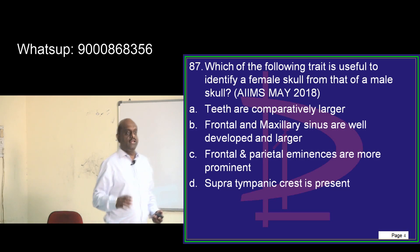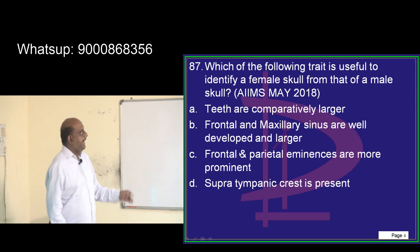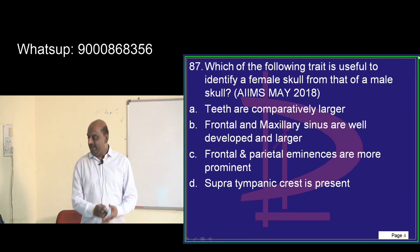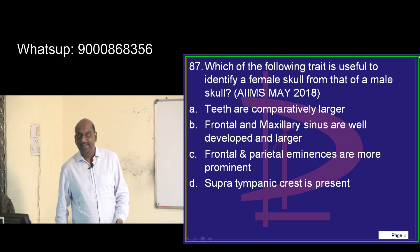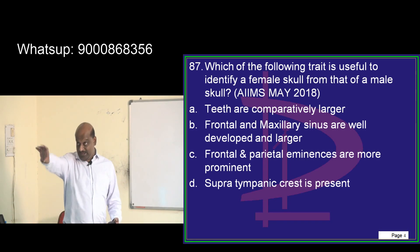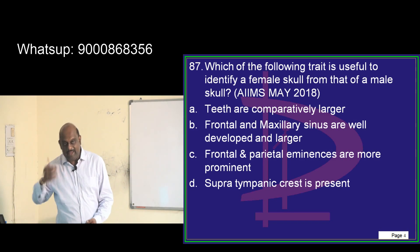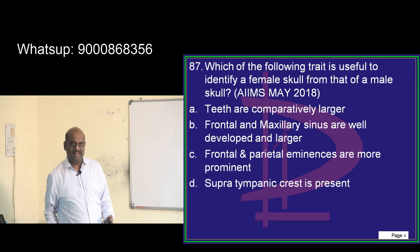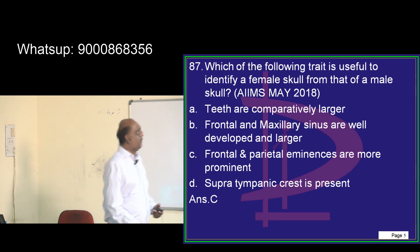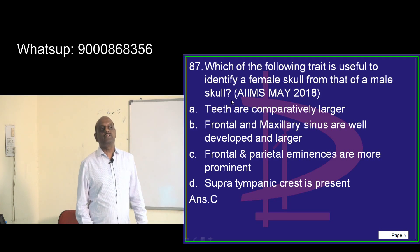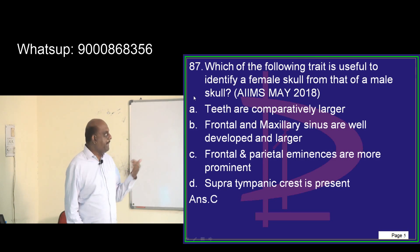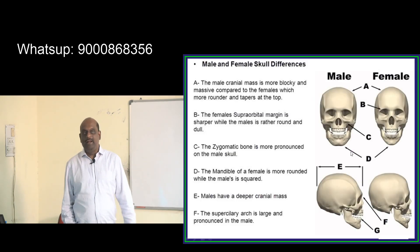To identify a female skull from a male skull: the frontal and parietal eminences are more prominent in the female skull compared to the male skull, which is a key differentiator. The male cranial mass is more blocky and massive, whereas the female cranial mass is rounder and tapers at the top.